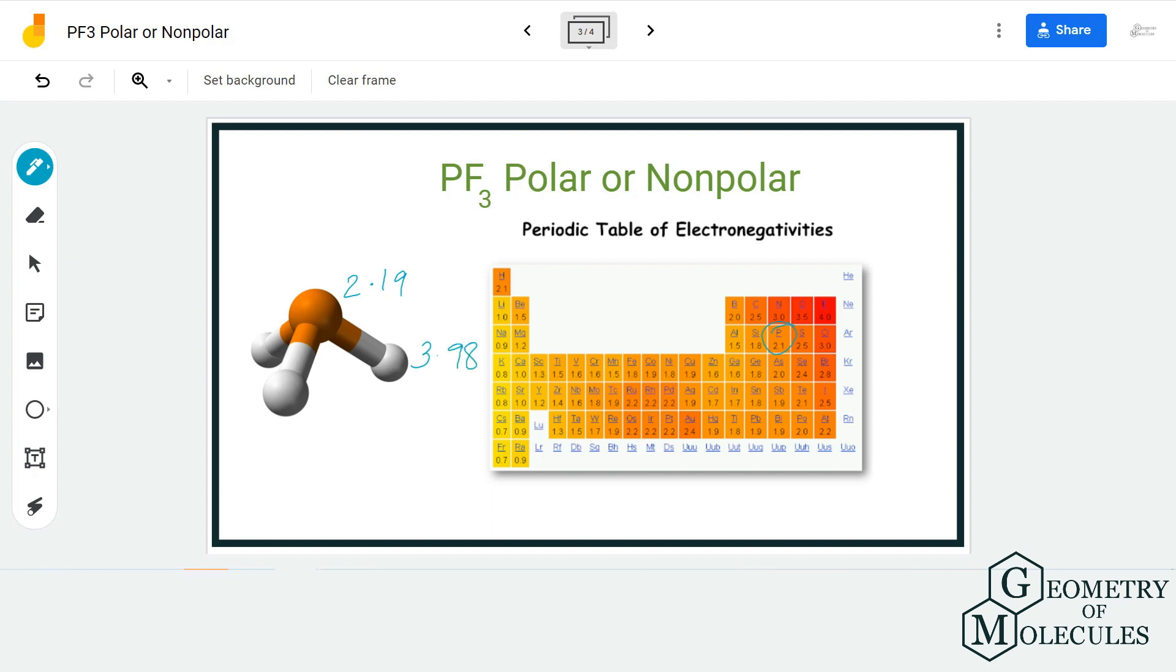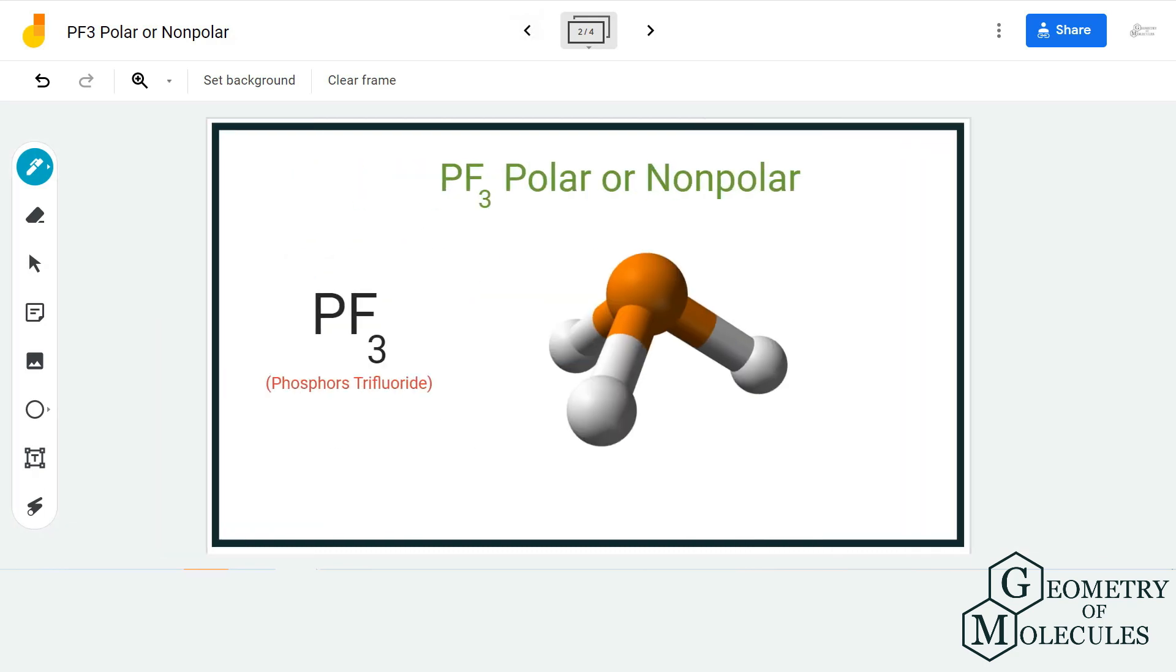Now because of this lone pair which is present on the phosphorus atom, it pushes these atoms down which distorts its shape and distorts its symmetry. So instead of cancelling the dipole moments out, these dipole moments are summed up.